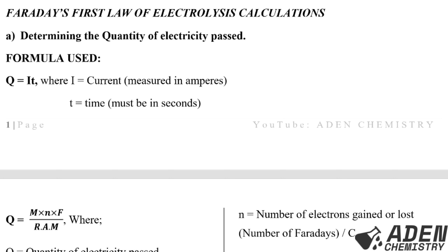Now let's go to Faraday's First Law of electrolysis calculations. The first part is determining the quantity of electricity passed, supplied, or used. We have two formulas. The first formula: quantity of electricity Q equals I times T, where I is current measured in amperes and T is time, which must be in seconds.